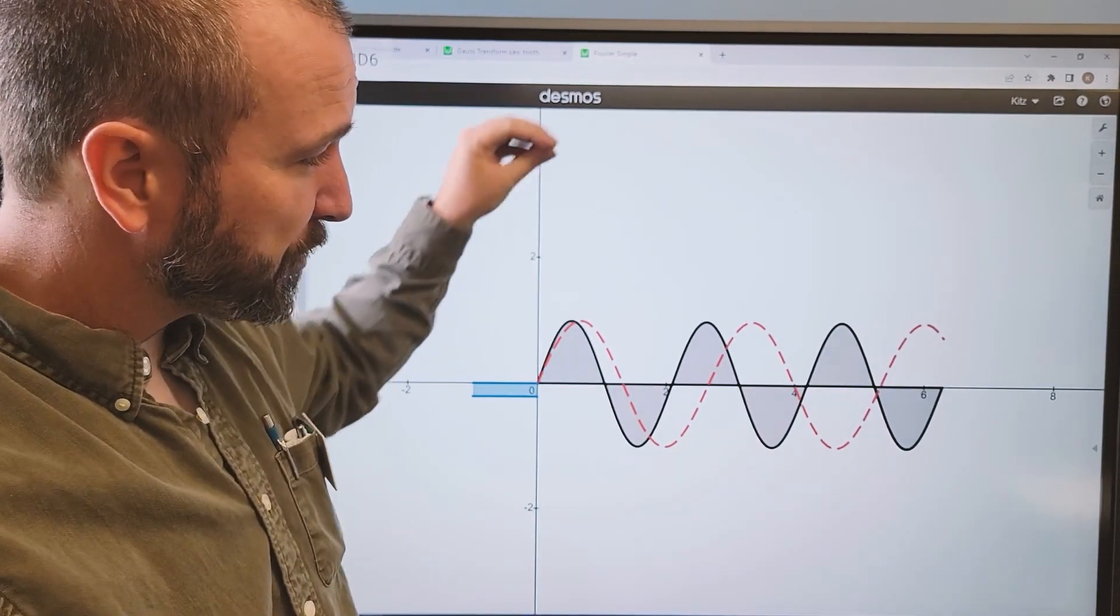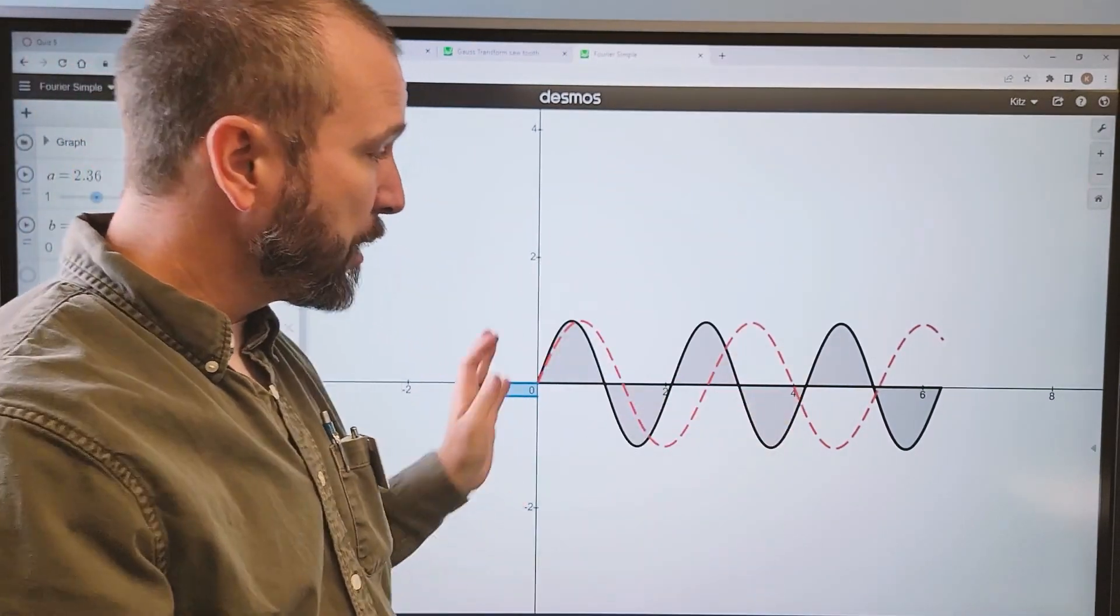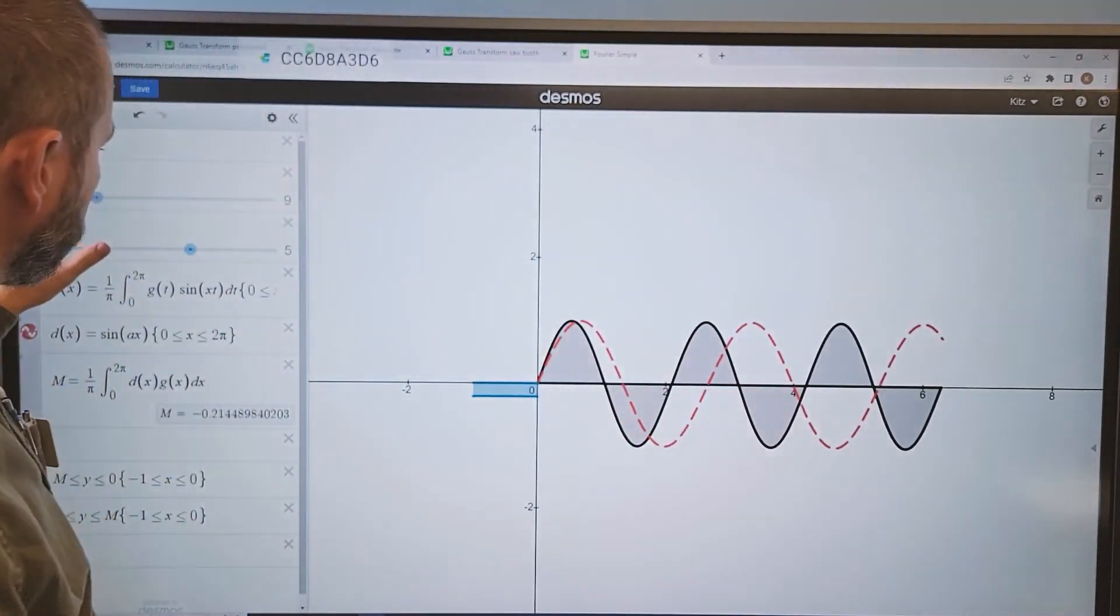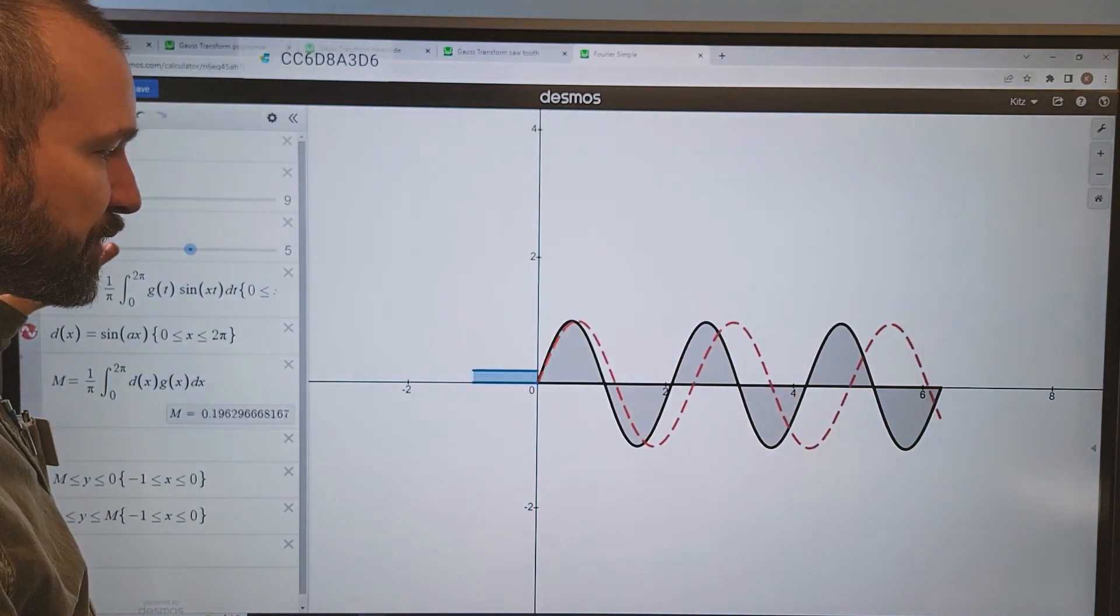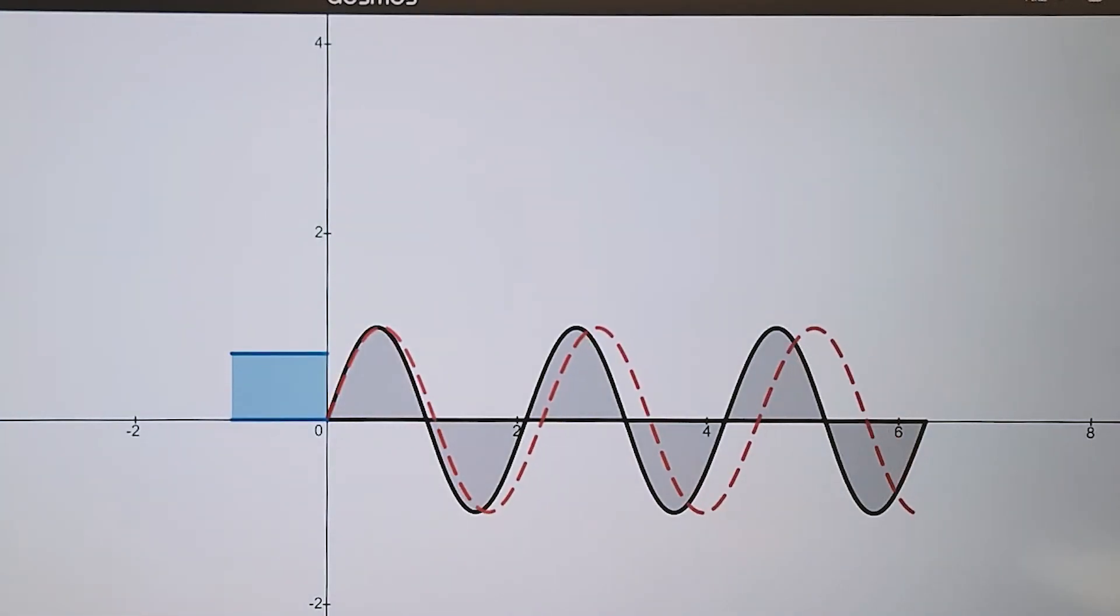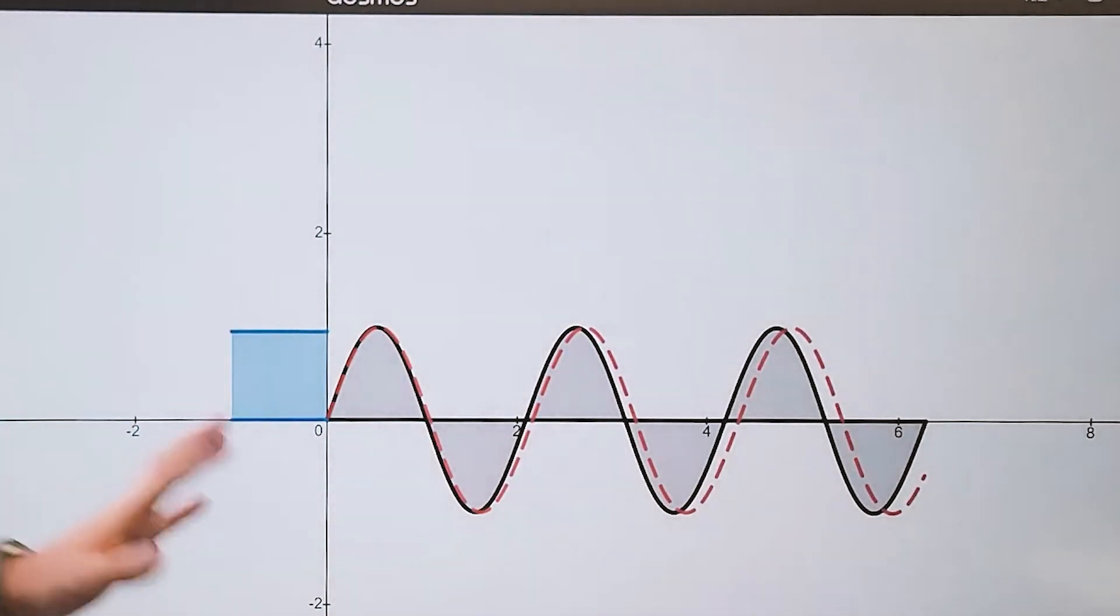Watch what happens when the frequency of the density function matches exactly with the frequency of the wave. So I'll just slide this over so that they get very close. And you can see now this total mass is getting very, very large.